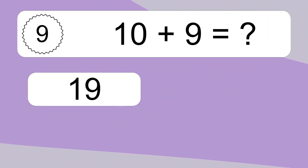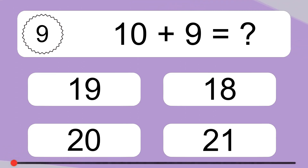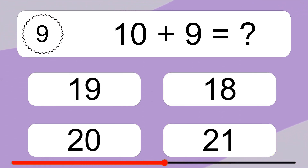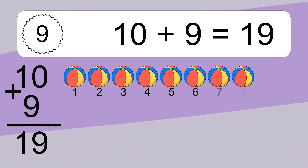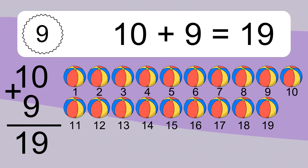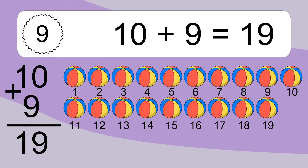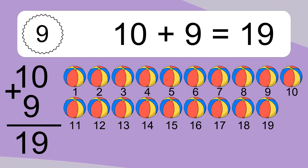10 plus 9 equals what? 10 plus 9 equals 19. Let's count it. 1, 2, 3, 4, 5, 6, 7, 8, 9, 10, 11, 12, 13, 14, 15, 16, 17, 18, 19.